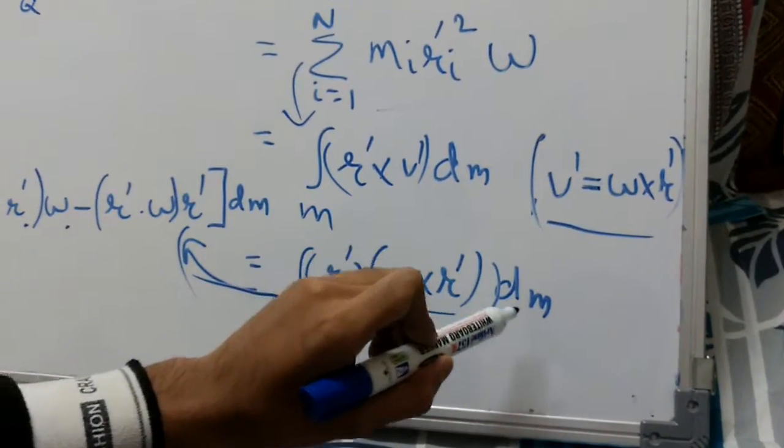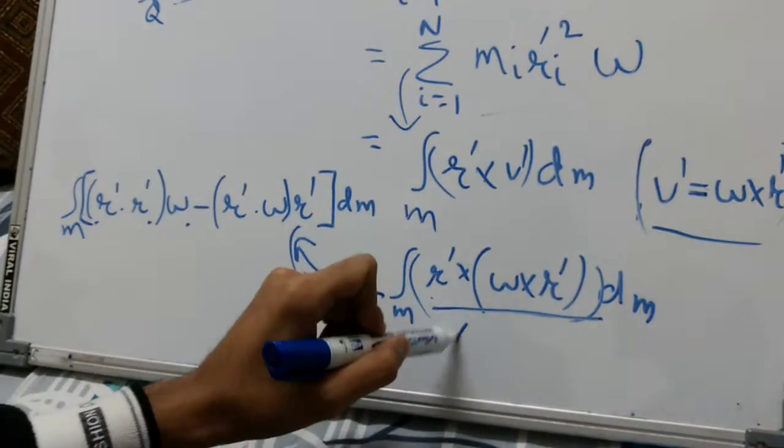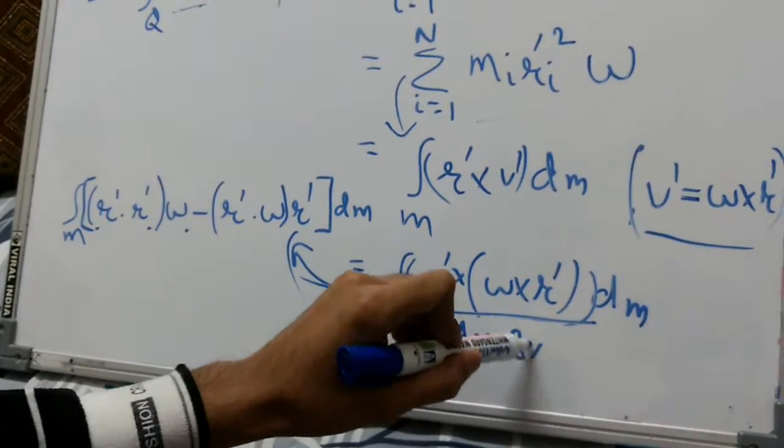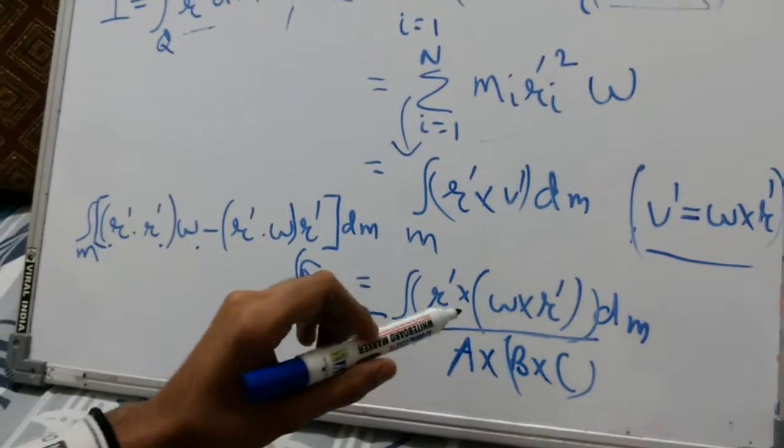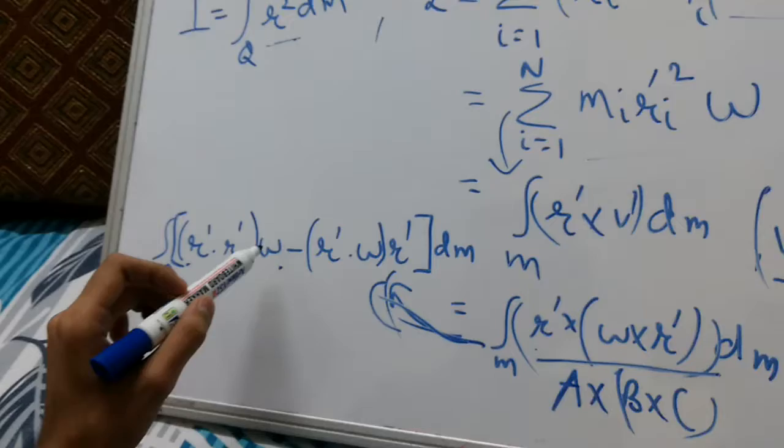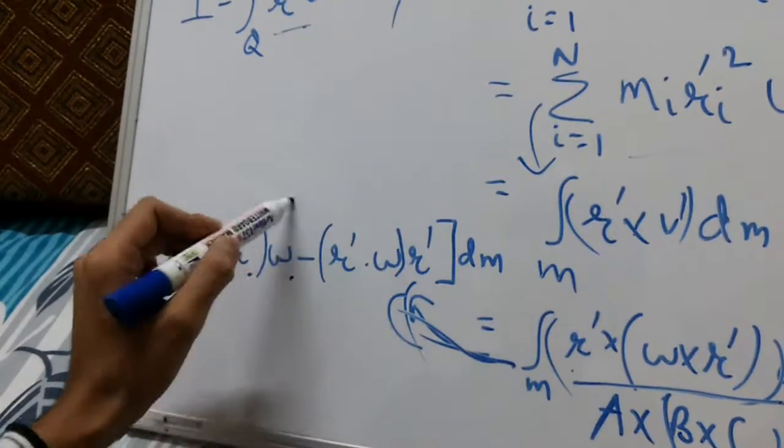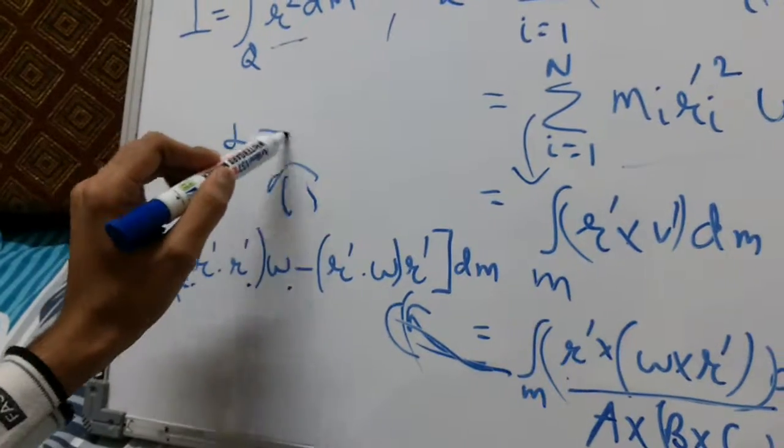Here I can apply the property of vector triple product, which is a cross b cross c. It is written as follows: r dash dot r dash into omega minus r dash dot omega into r dash dm. This comes out to be the angular momentum.